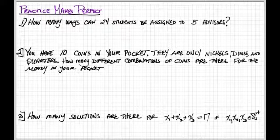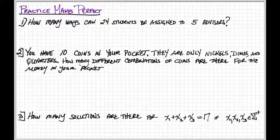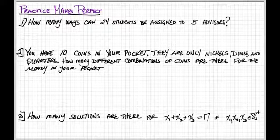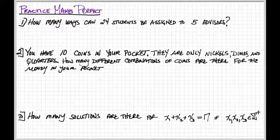How many ways can 24 students be assigned to five advisors? You have 10 coins in your pocket. They are only nickels, dimes, and quarters. How many different combinations of coins are there for the money in your pocket? And how many solutions are there for X1 plus X2 plus X3 equals 17 if X1, X2, and X3 all have to be a positive integer?